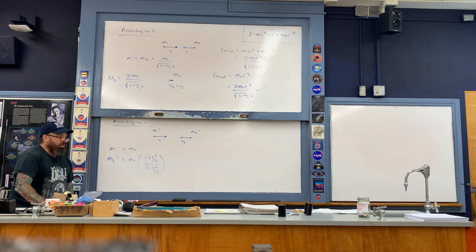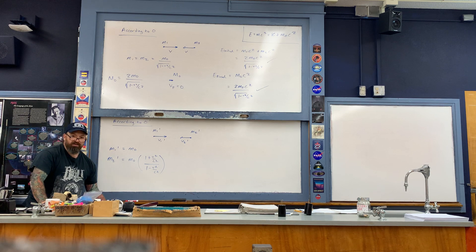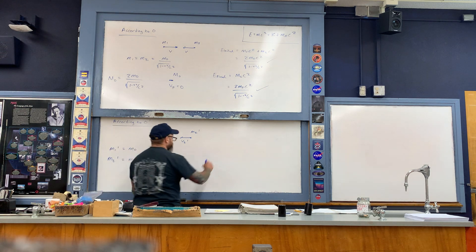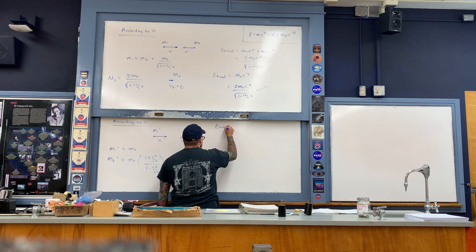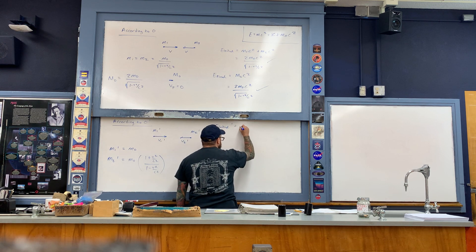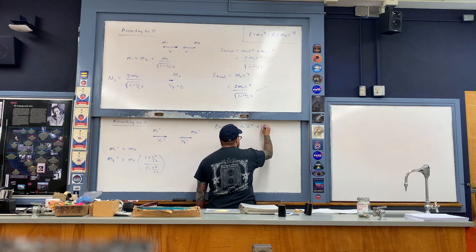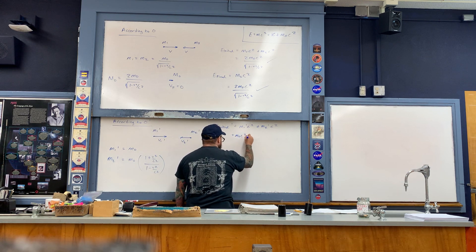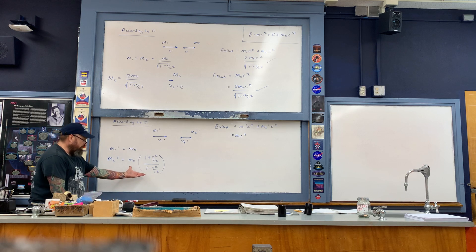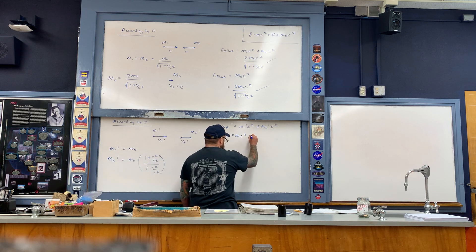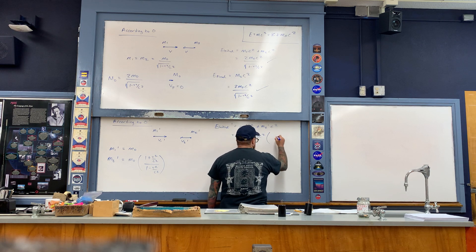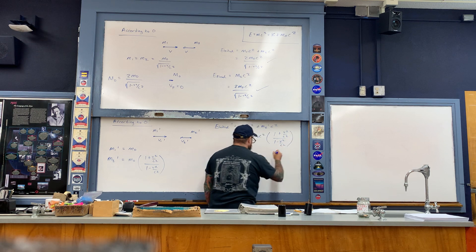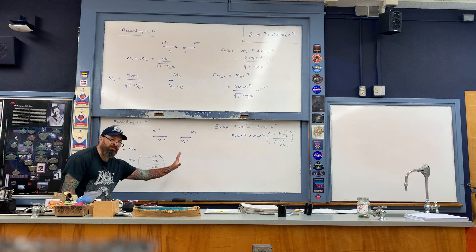Using these quantities, let's calculate the initial energy of the system according to O prime — call this E_initial prime. E_initial prime equals m1 prime·c² plus m2 prime·c². m1 prime was m_naught, and then we take the expression for m2 prime and multiply it by c².